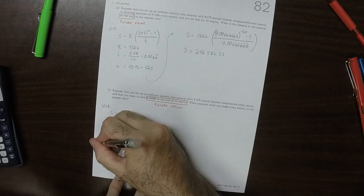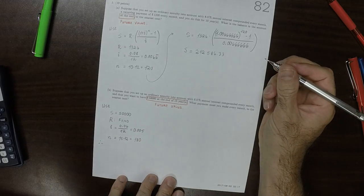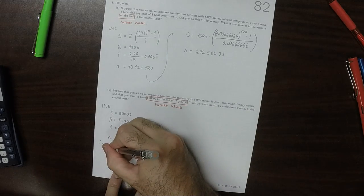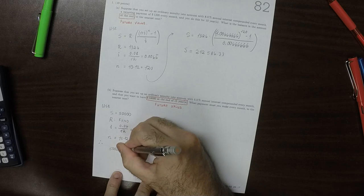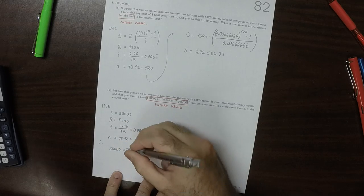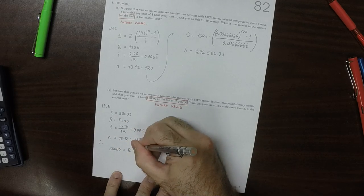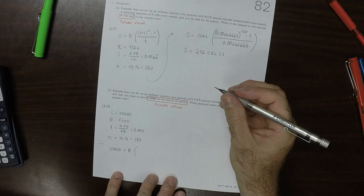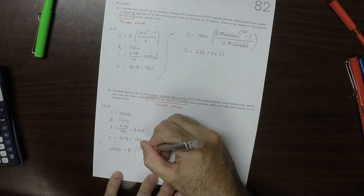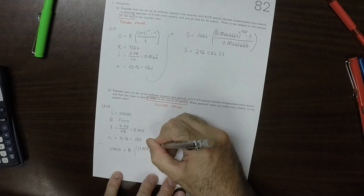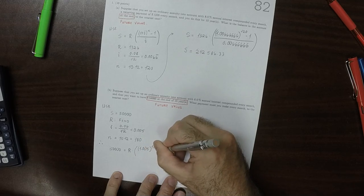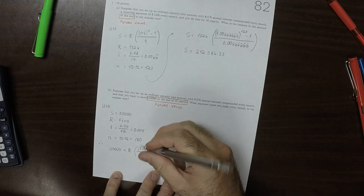Okay, so as a result, we have the equation 50,000 equals R, which is the unknown, multiplied by 1.005 to exponent 180 minus 1 divided by 0.005.